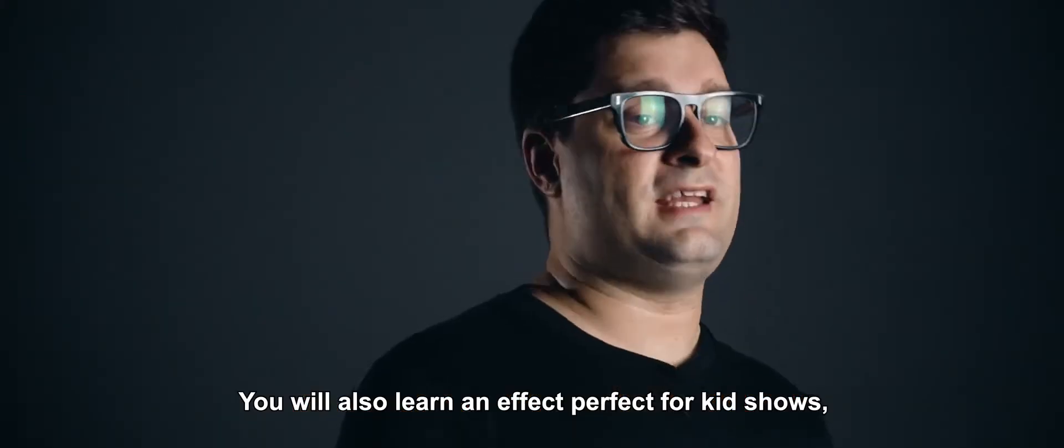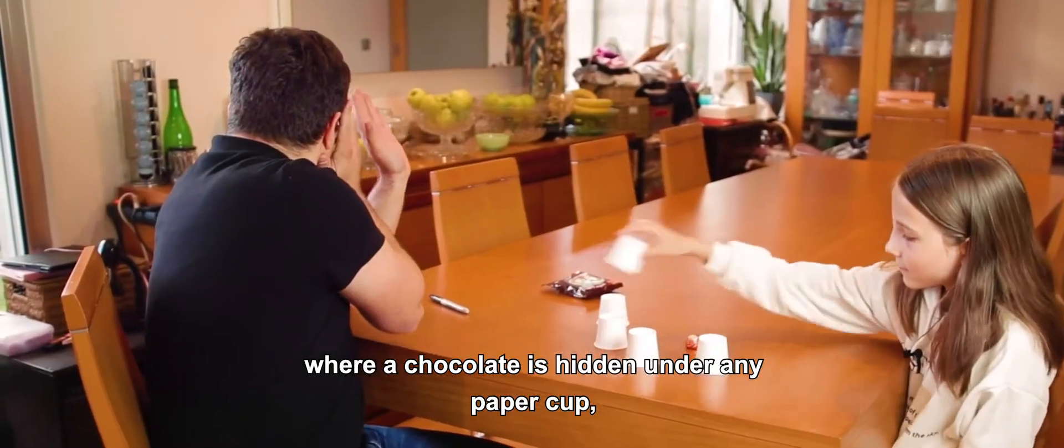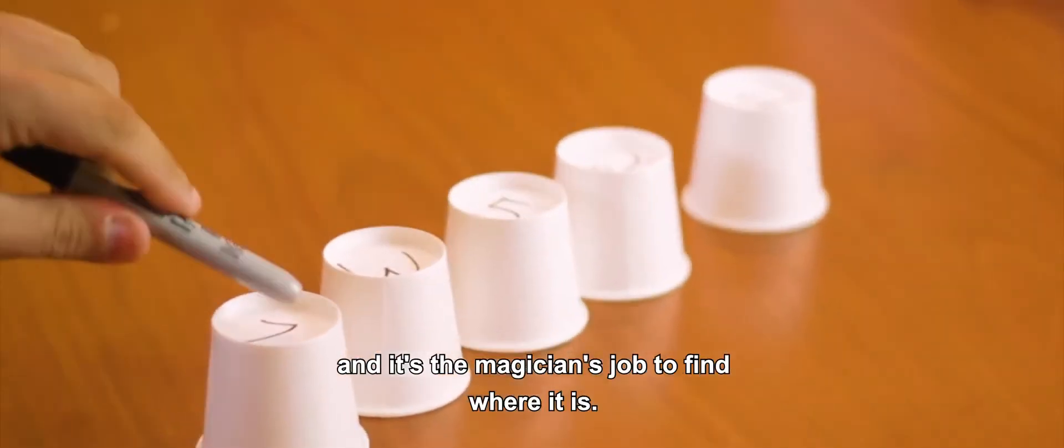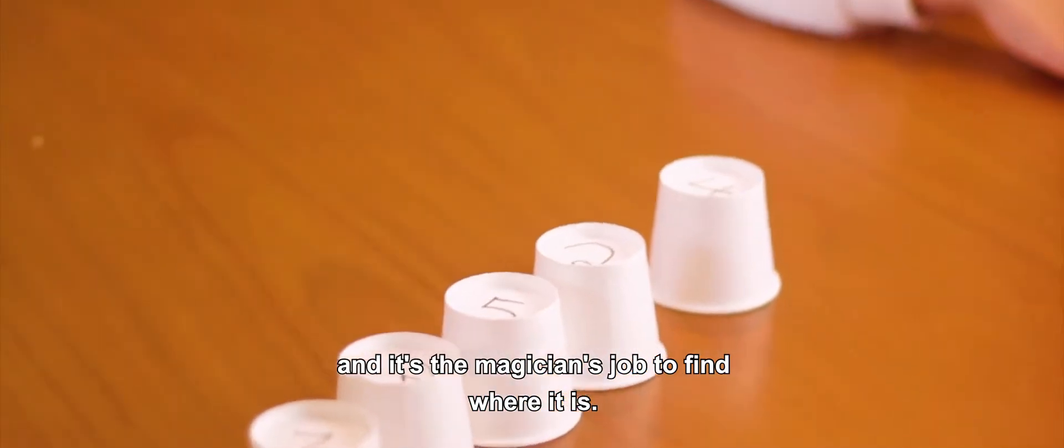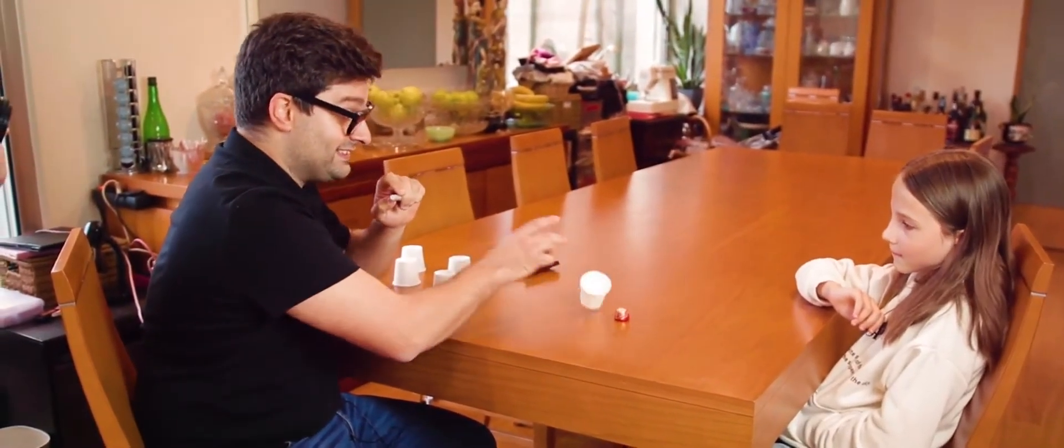You will also learn an effect perfect for kids' shows, where a chocolate is eaten under any paper cup, and it's the magician's job to find where it is. I know it's not number one, but it's very easy. I'm sure it's not in number two. It's exactly the chocolate in number four.